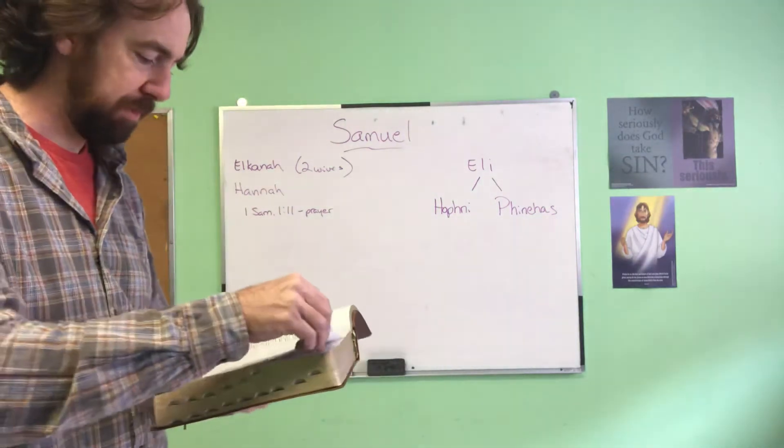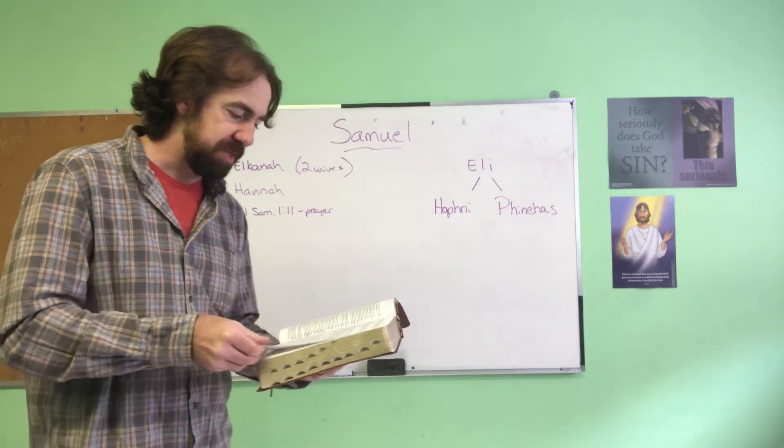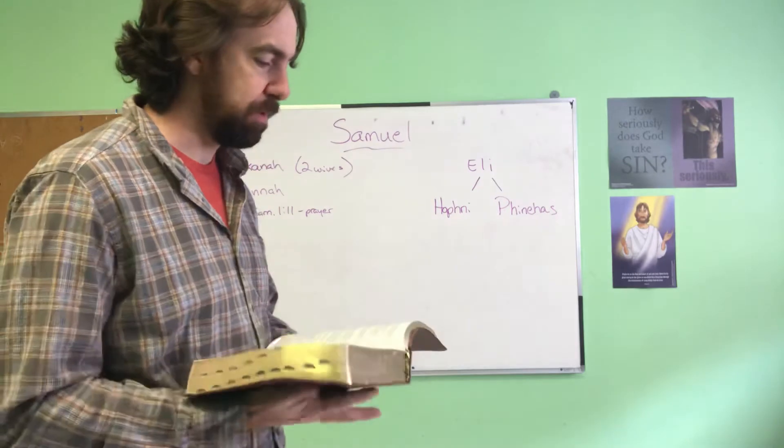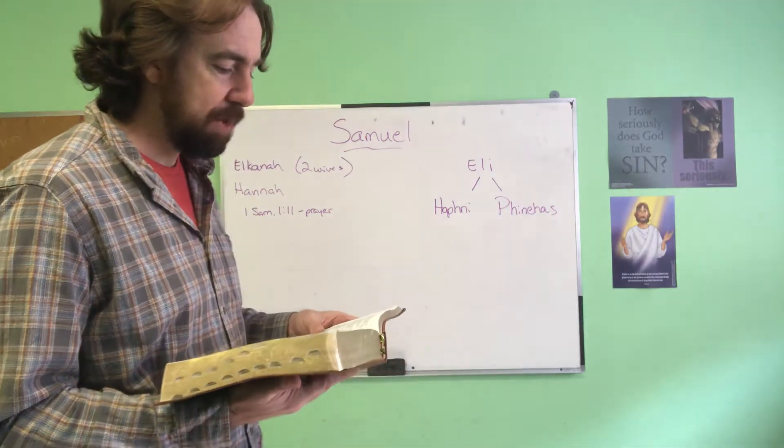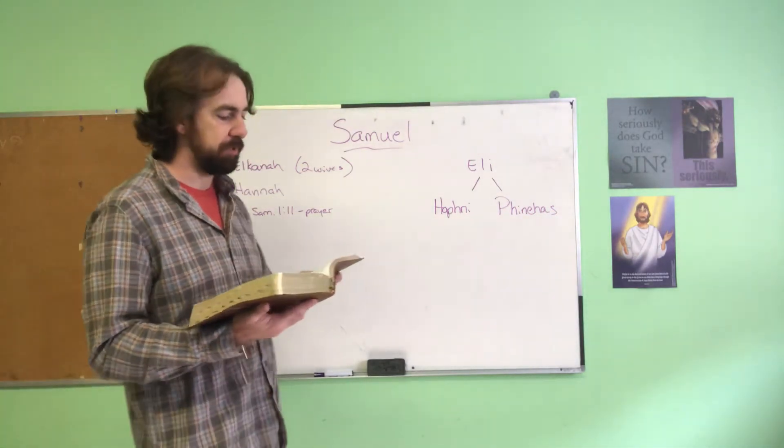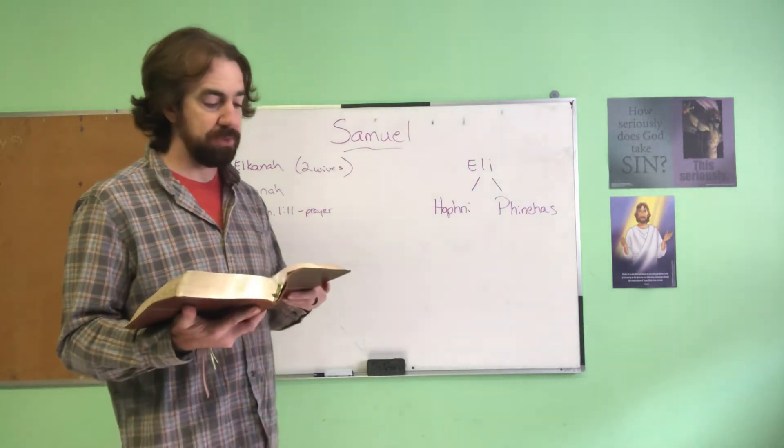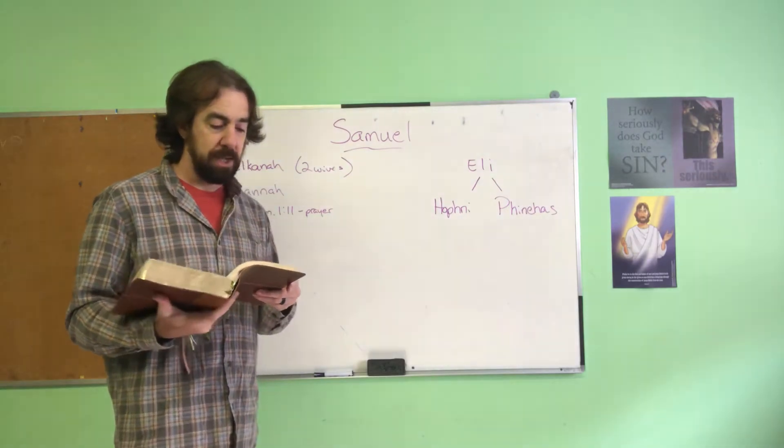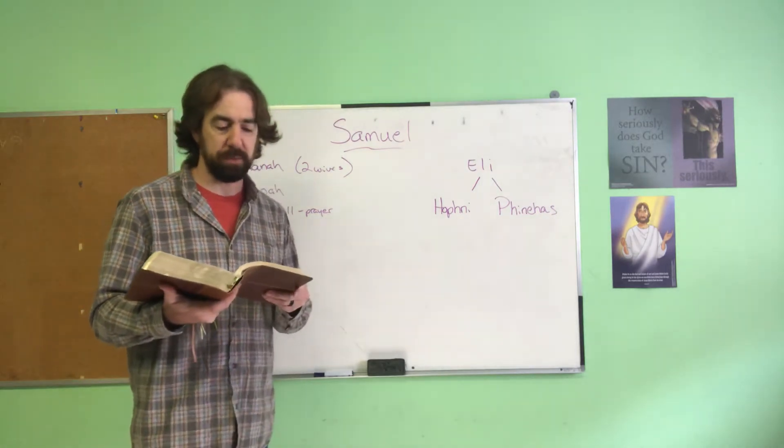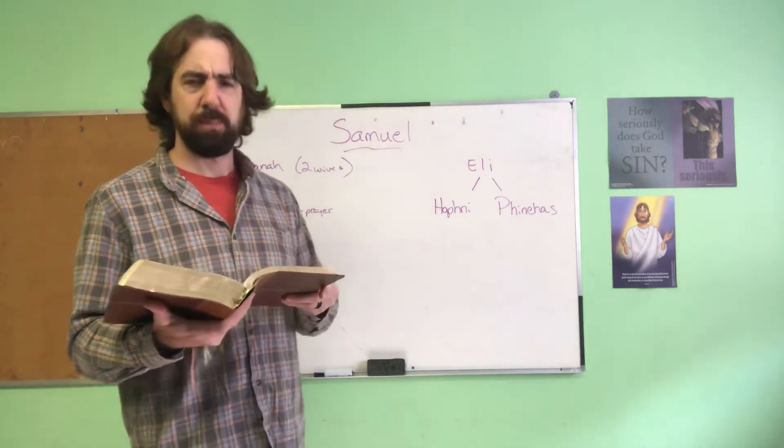Right, so Eli the priest was sitting on his chair by the doorpost of the Lord's house. And in her deep anguish, Hannah prayed to the Lord, weeping bitterly, and she made a vow saying, 'Lord Almighty, if you will only look on your servant's misery and remember me and not forget your servant, but give her a son, then I will give him to the Lord for all the days of his life, and no razor will ever be used on his head.' As she kept praying to the Lord, Eli observed her mouth. Hannah was praying in her heart, and her lips were moving, but her voice was not heard. Eli thought she was drunk and said to her, 'How long are you going to stay drunk? Put away your wine.'